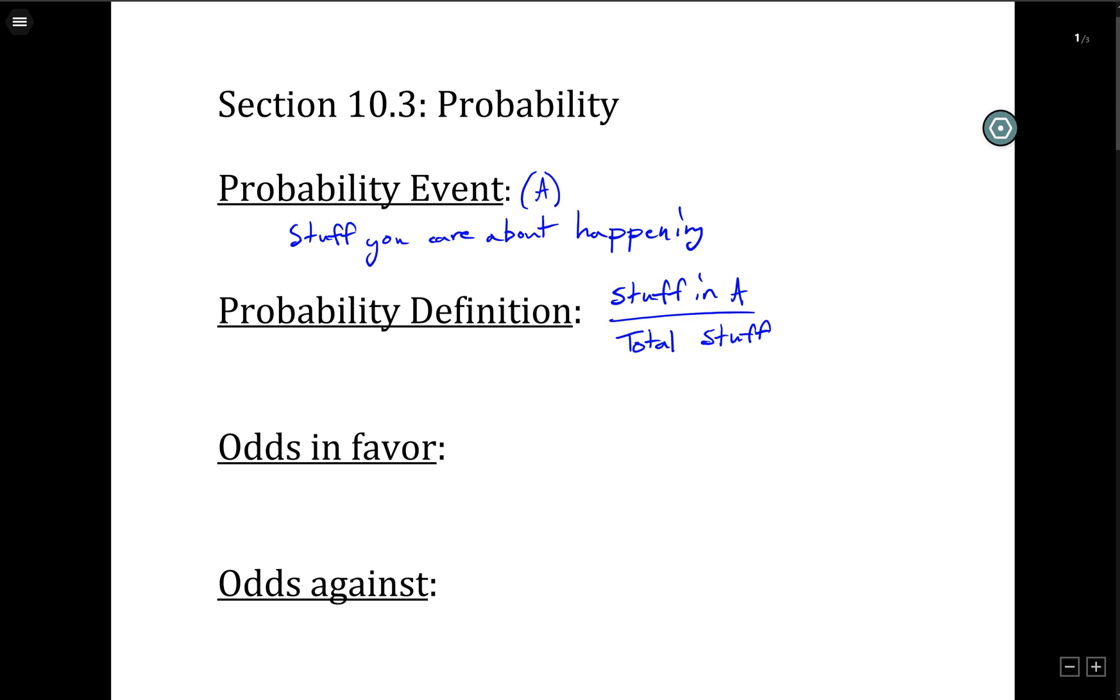All right, so we also have these things called odds. Odds are typically used in casinos, for sporting events. That's usually where you see those. The odds in favor. Typically odds are written either as a fraction or as more of like a ratio. So instead of it being the stuff in A over the total stuff, it's the stuff in A as compared with the stuff not in A. So the odds in favor, the stuff you actually want to happen, is going to be on top. Here's the stuff you don't want to happen. It's not the total things. It's the stuff you don't want to have happen. If you add up these two, what will it equal? The total.